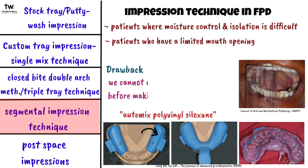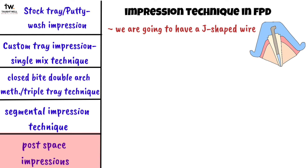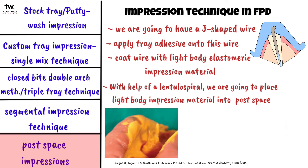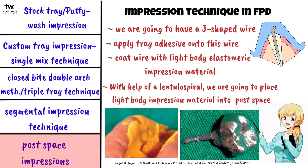The drawback of the segmental technique is that we cannot evaluate each segment before making the final impression. The next is the post-space impression technique. A J-shaped wire is placed after post-space preparation. Tray adhesive is applied to the wire, which is coated with light body elastomeric impression material. Using a lentulo spiral, light body material is placed into the post-space. Putty material is mixed on a stock tray and an impression is made. After polymerization, the impression is removed and poured with a gypsum product to get a cast with a replica of the post-space, which is used for fabricating a wax pattern and a cast customized post and core.